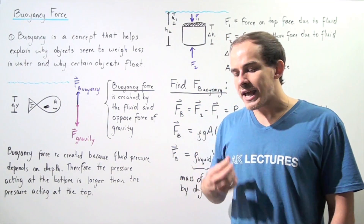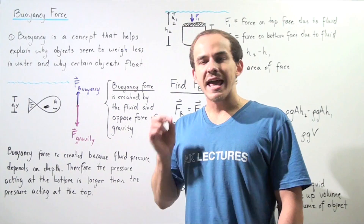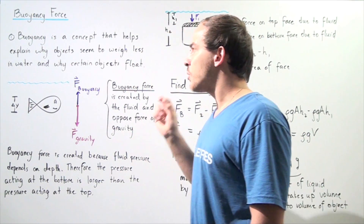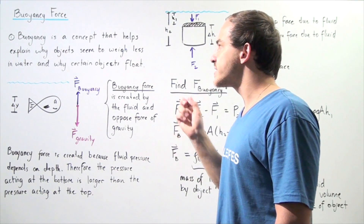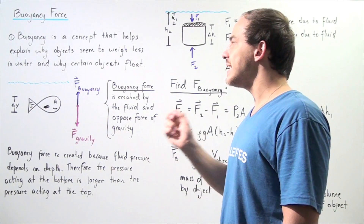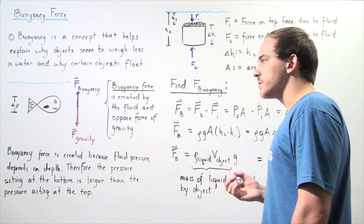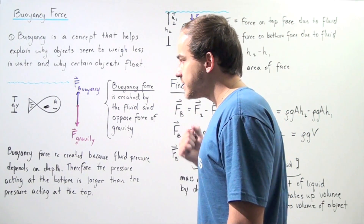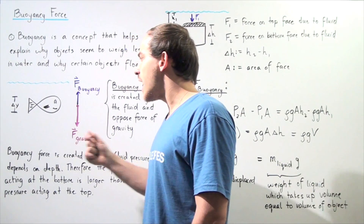To explain these phenomena, we have to examine a principle known as buoyancy. Buoyancy is a particular concept that helps us explain why objects seem to weigh less in water and why certain objects are able to float. To examine this concept of buoyancy, let's look at the following natural phenomenon.